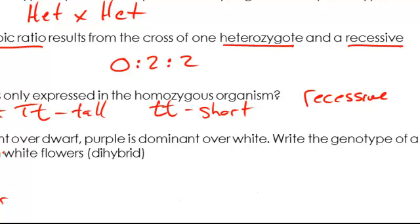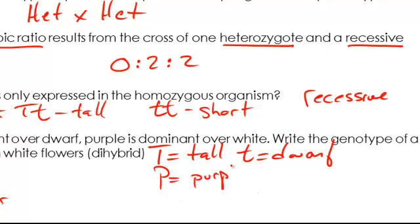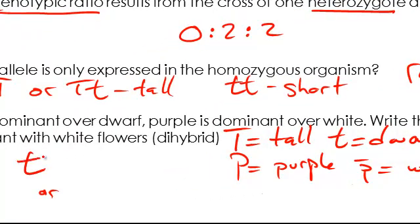Number seven, tall is dominant over dwarf or short, and purple is dominant over white. What is the genotype of a dwarf white plant with white flowers? First of all, you need to make a key, so here we're going to look at big T is tall, and little t is dwarf or short, and purple, big P is purple, and little p is white. And notice that I put a line over the little p to indicate that it's recessive because the dominant and the recessive form of that allele looks so similar. So if I want to write the genotype of a dwarf plant with white flowers, dwarf would be homozygous recessive, so that would be little t little t, and white flowers would be little p little p.